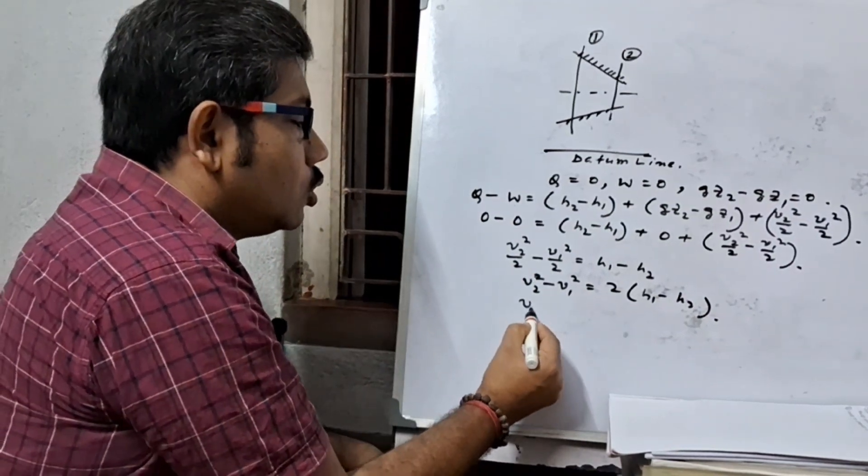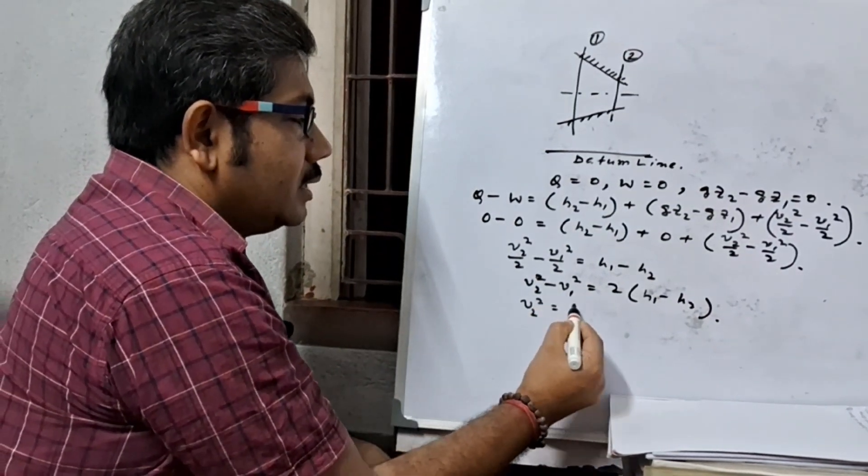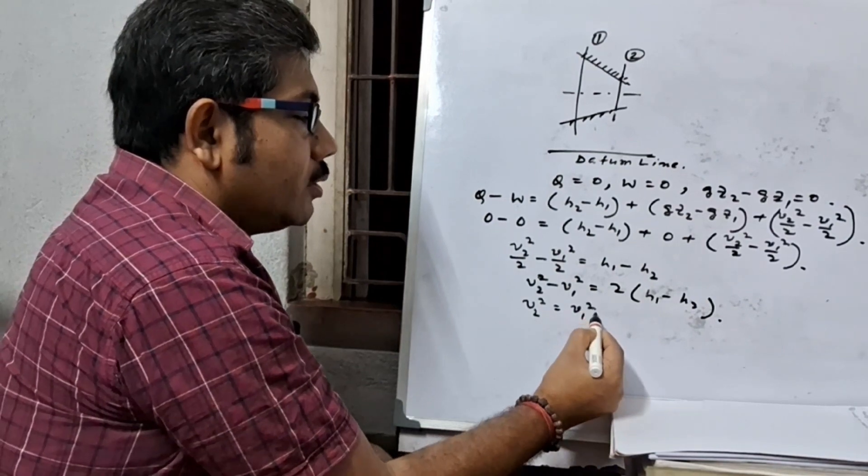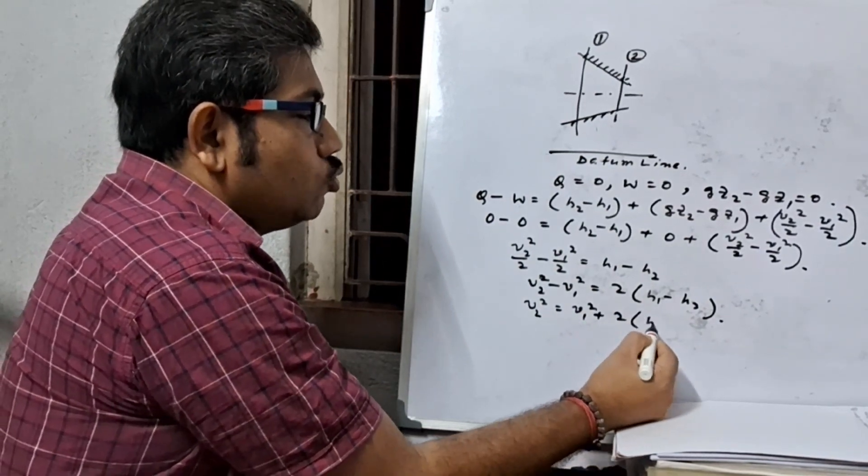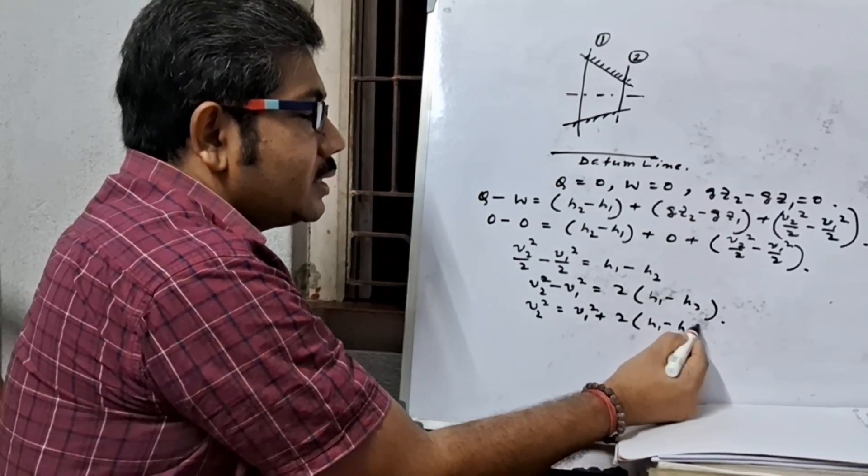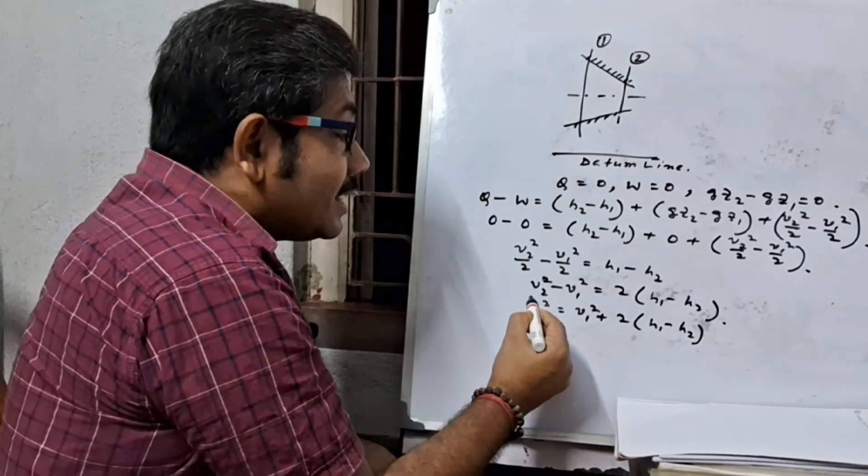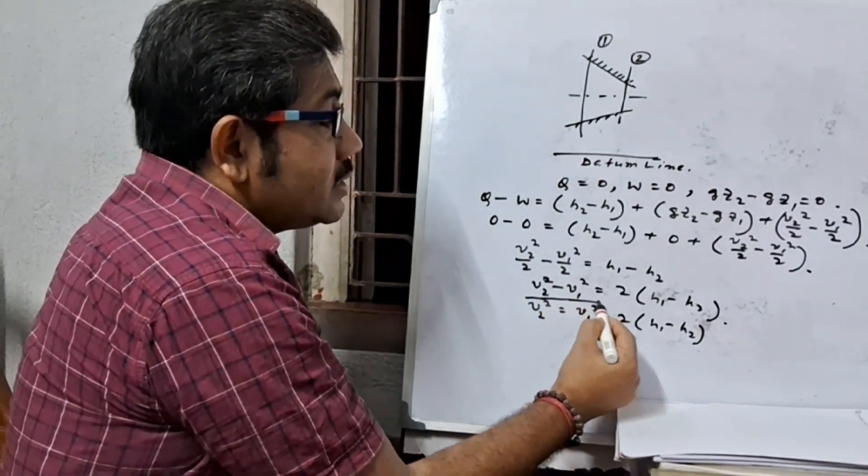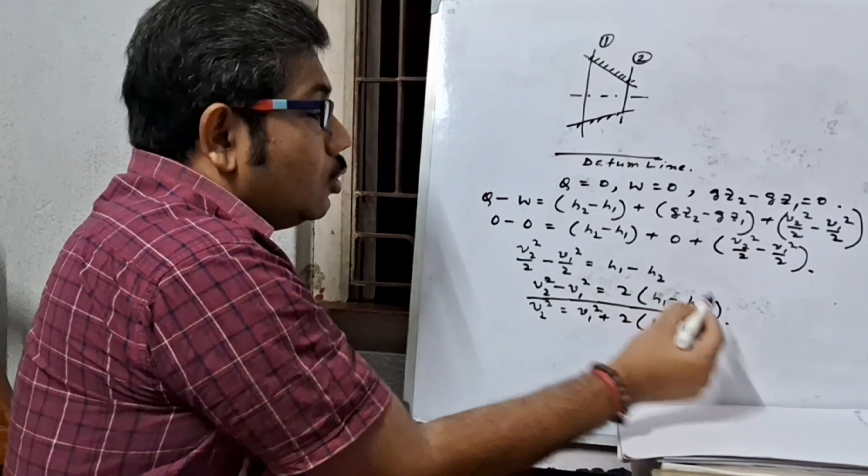So v2 squared by 2 equals v1 squared plus 2 times h1 minus h2. So this is actually the steady flow energy equation for nozzle.